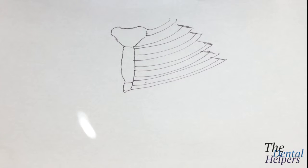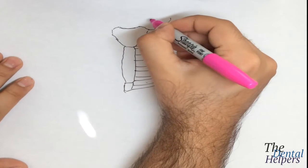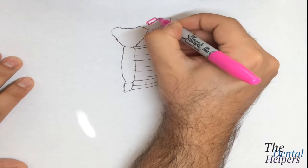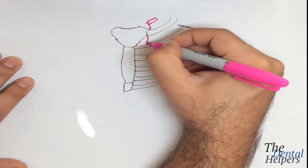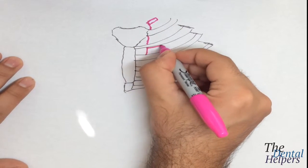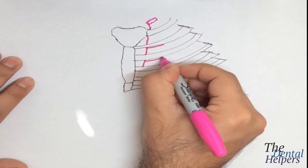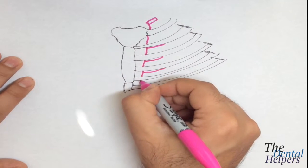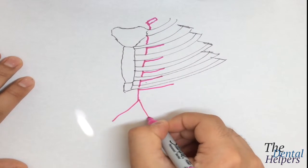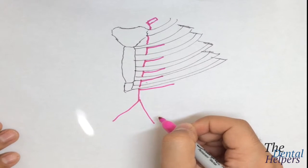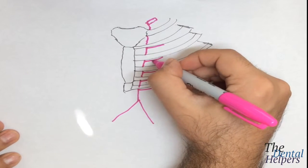From the aorta, we have the posterior intercostal arteries that come down, branching from the descending aorta into the intercostal spaces. In the next couple of videos, we'll get into what the heart looks like and the vasculatures. We also have the internal thoracic artery, which is usually right around here.